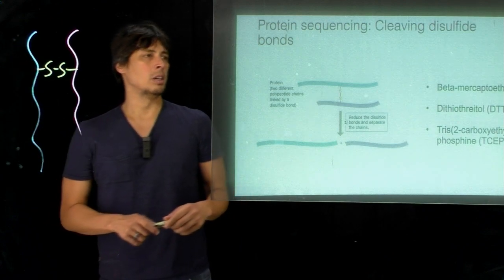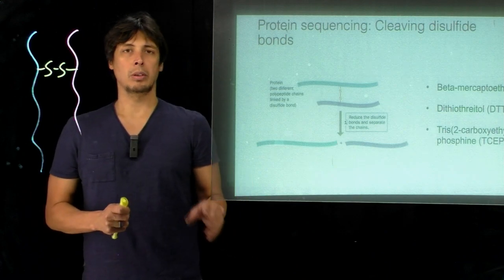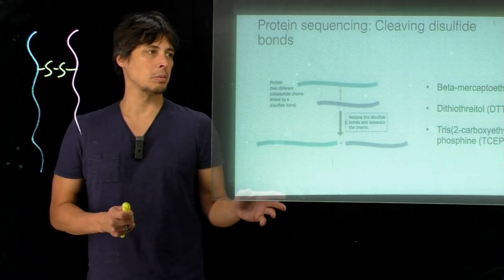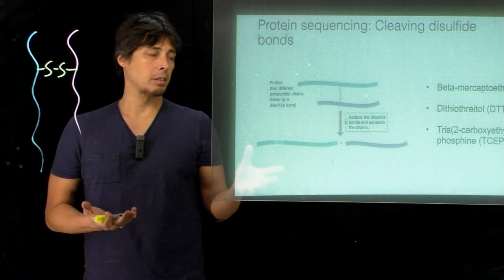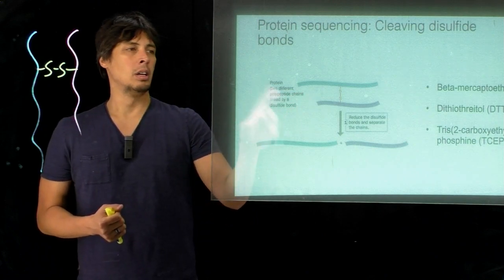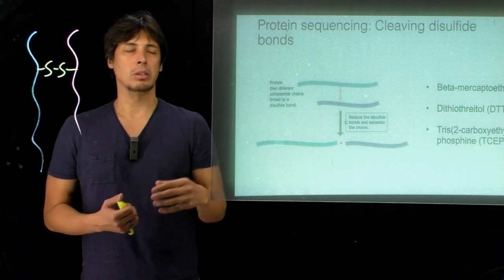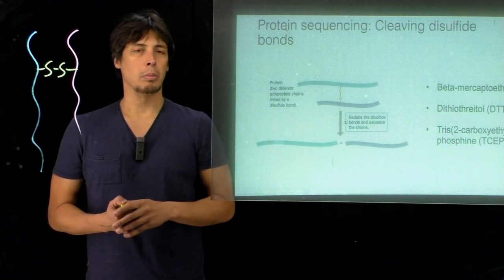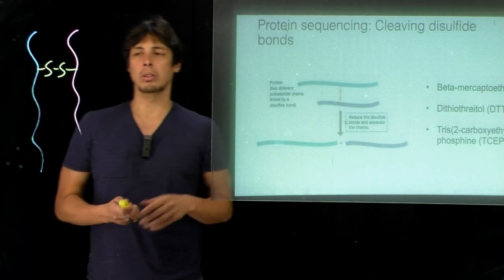The way to do that is you can use a disulfide reductant such as beta-mercaptoethanol, dithiothreitol, otherwise known as DTT, or Tris(2-carboxyethyl)phosphine, otherwise known as TCEP.